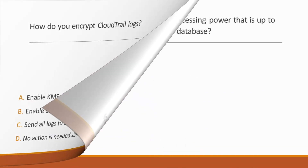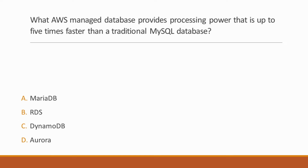Next question: What AWS managed database provides processing power that is up to five times faster than a traditional MySQL database? Options: A. MariaDB, B. RDS, C. DynamoDB, D. Aurora. Correct answer is option D, Aurora, because Aurora is a fully managed MySQL and PostgreSQL relational database that delivers up to five times the throughput of MySQL.